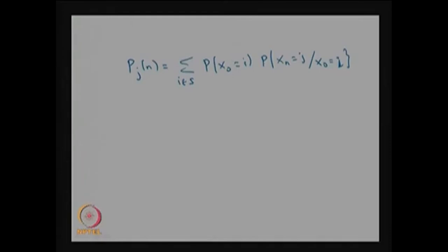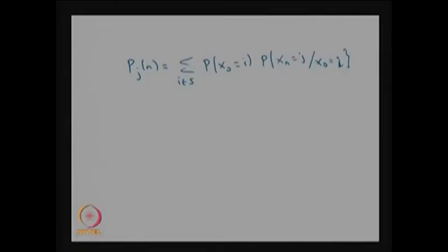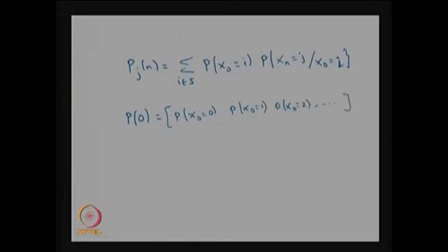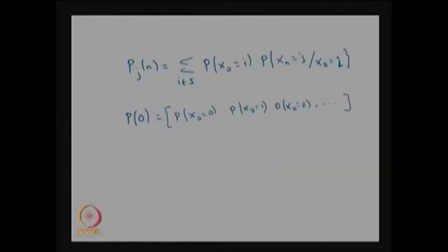To compute this distribution of X_n, you need the n-step transition probability as well as the initial distribution vector — the distribution of X_0. The vector p(0) consists of the probabilities that X_0 takes values 0, 1, 2, and so on. This is the initial probability vector. Unless otherwise stated, the state space takes values 0, 1, 2, and so on.